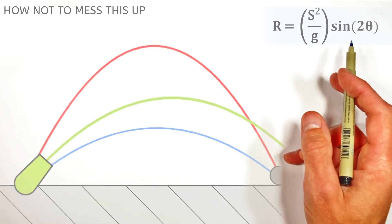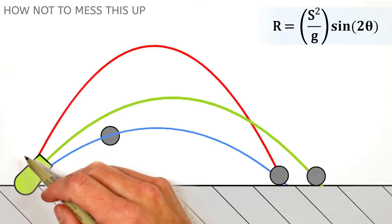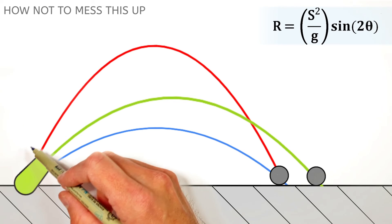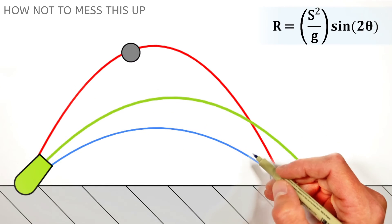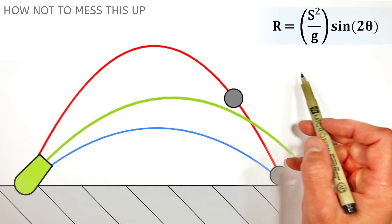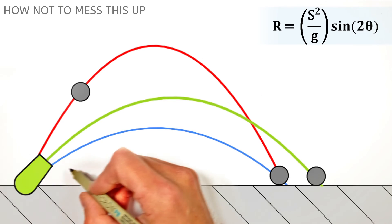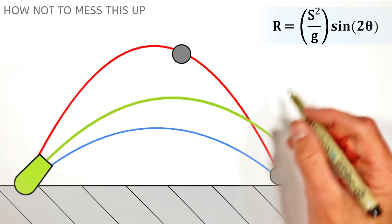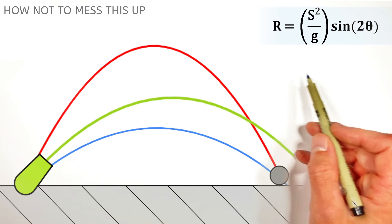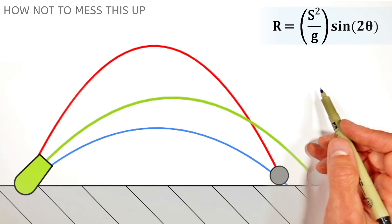The other thing about the range equation that trips a lot of people up is it tells us absolutely nothing about how much time an object is going to spend in the air. So if you're looking at some physics problem, even if the object is shot across a horizontal surface, and that problem is asking you about time, the range equation isn't going to help you out at all.